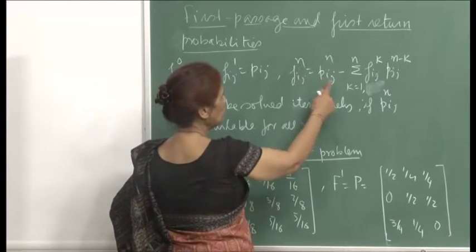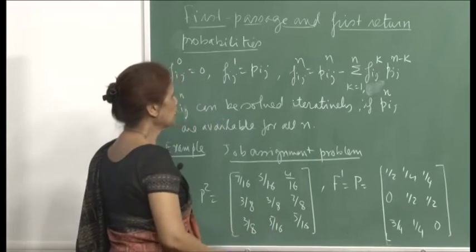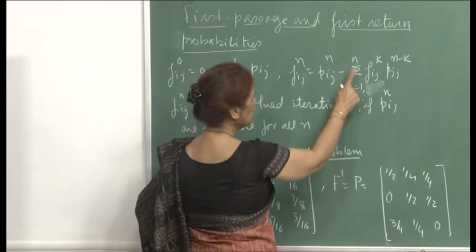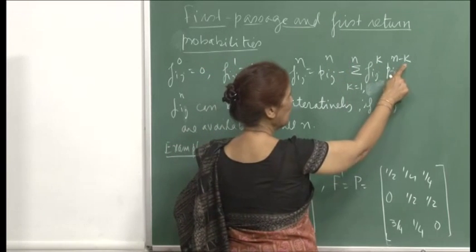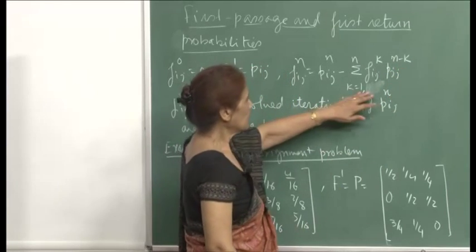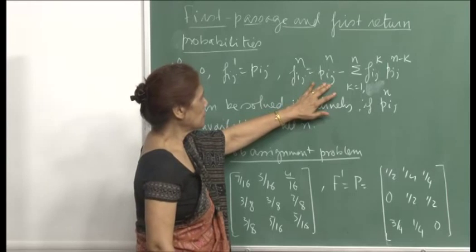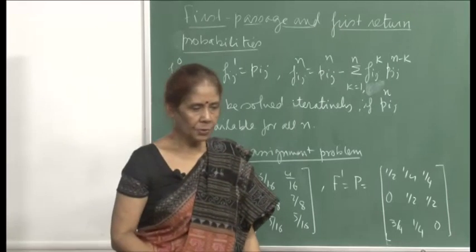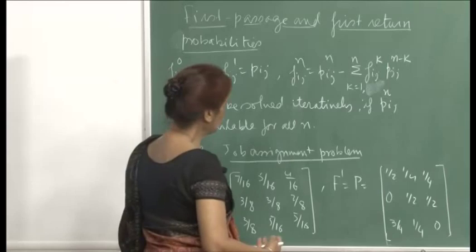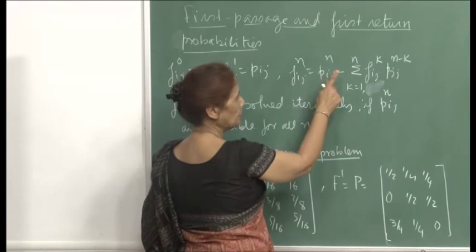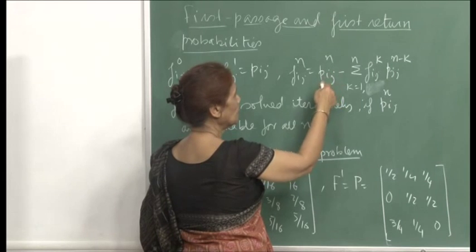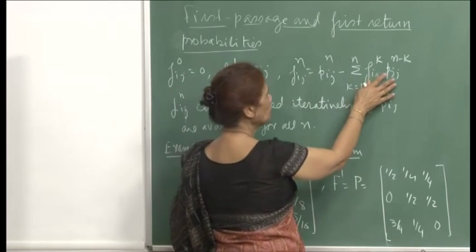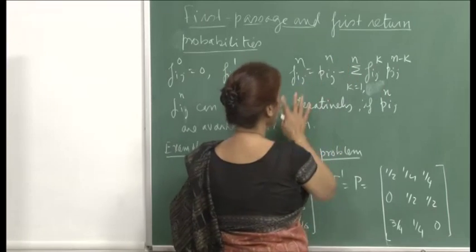For f_ij(n), we wrote down this recursive formula: f_ij(n) = p_ij(n) minus sigma over k from 1 to n of f_ij(k) times p_jj(n minus k). This is because p_ij(n) gives the probability of transitioning from i to j in n steps, and in between you could have visited state j multiple times. So all those paths are included, including going to j, staying at j, going somewhere and coming back.